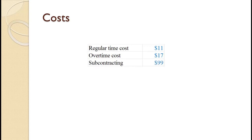Really what we are saying with this high subcontracting cost is that we do not really want to subcontract production. Four, the cost of holding one unit in inventory for one period is $4. This is much higher than the holding cost for the first example with similar labor cost, most likely due to much higher material cost.